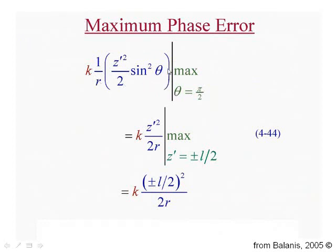Well, I could then ask where is this term maximum? And somewhat obviously it's maximum if theta equal pi over 2, in other words, broadside of the antenna. That's where sine squared theta is 1. And so the maximum phase error is k z prime squared over 2 over r. And this is maximum when z prime is equal to plus or minus l over 2. So the maximum phase error is now k plus or minus l over 2 quantity squared over 2r.